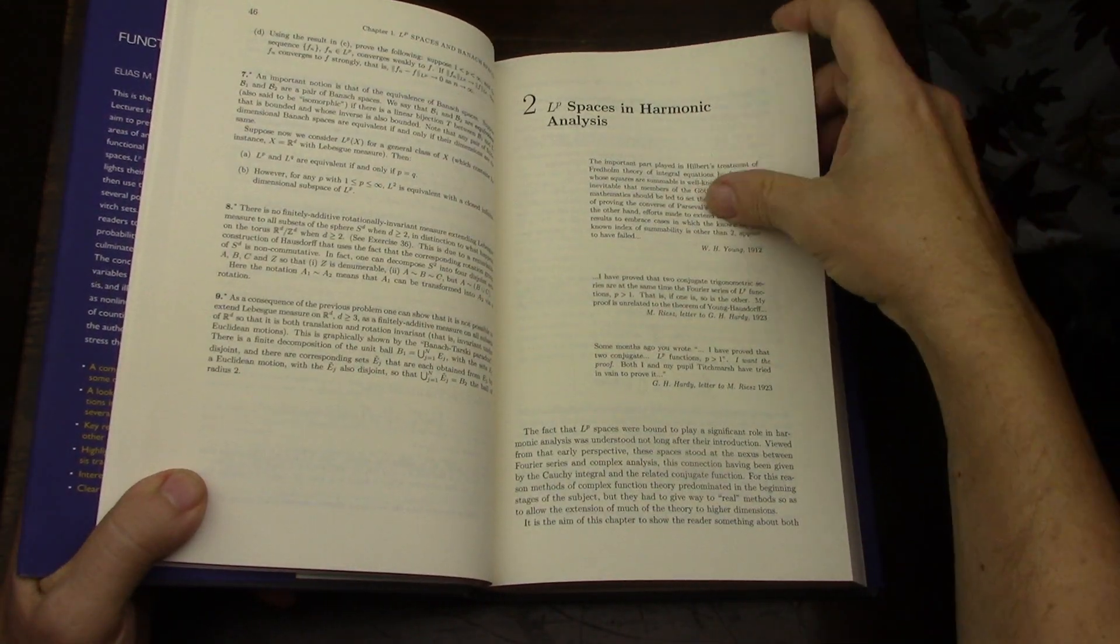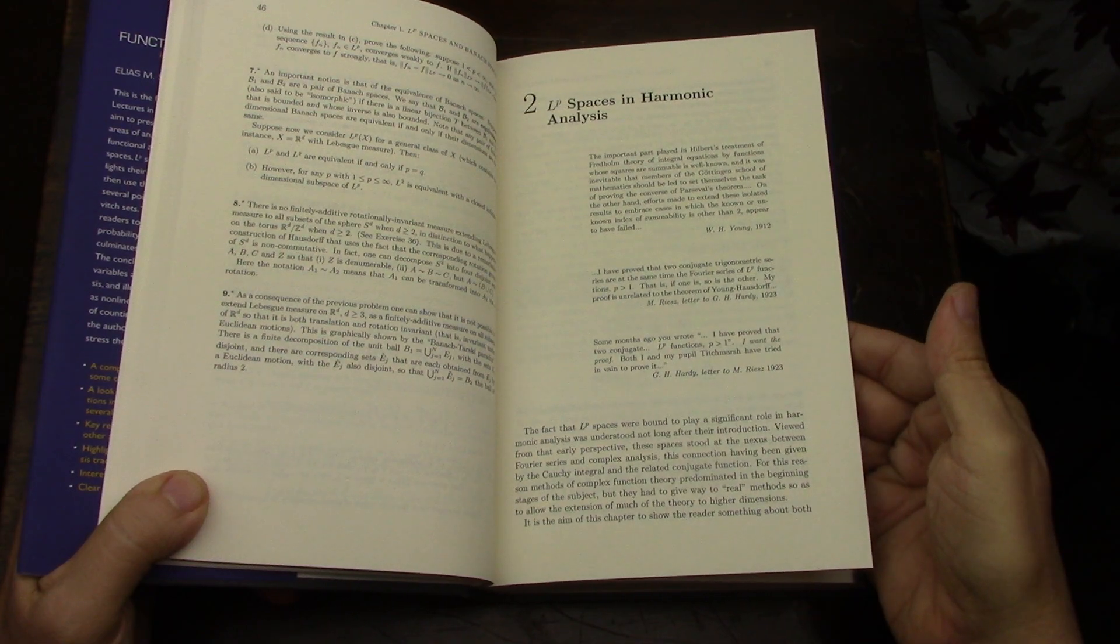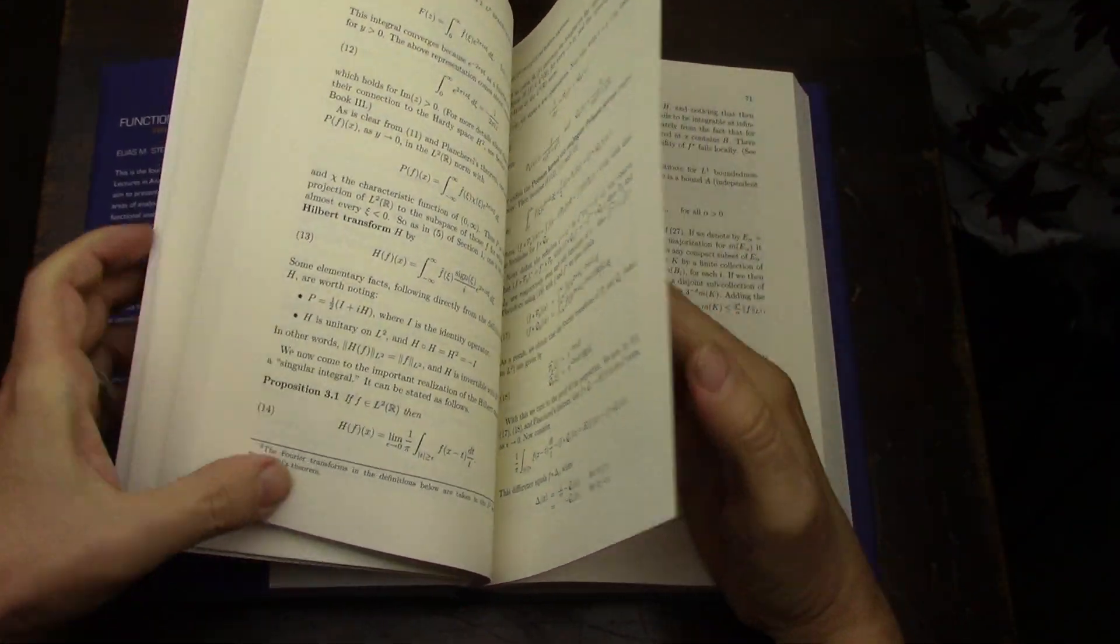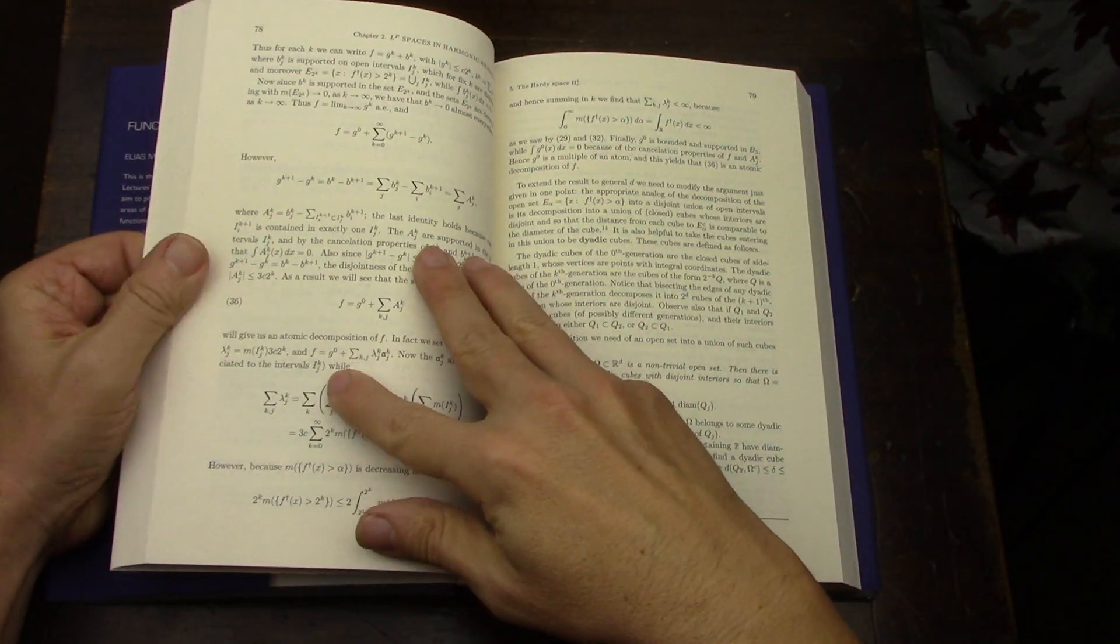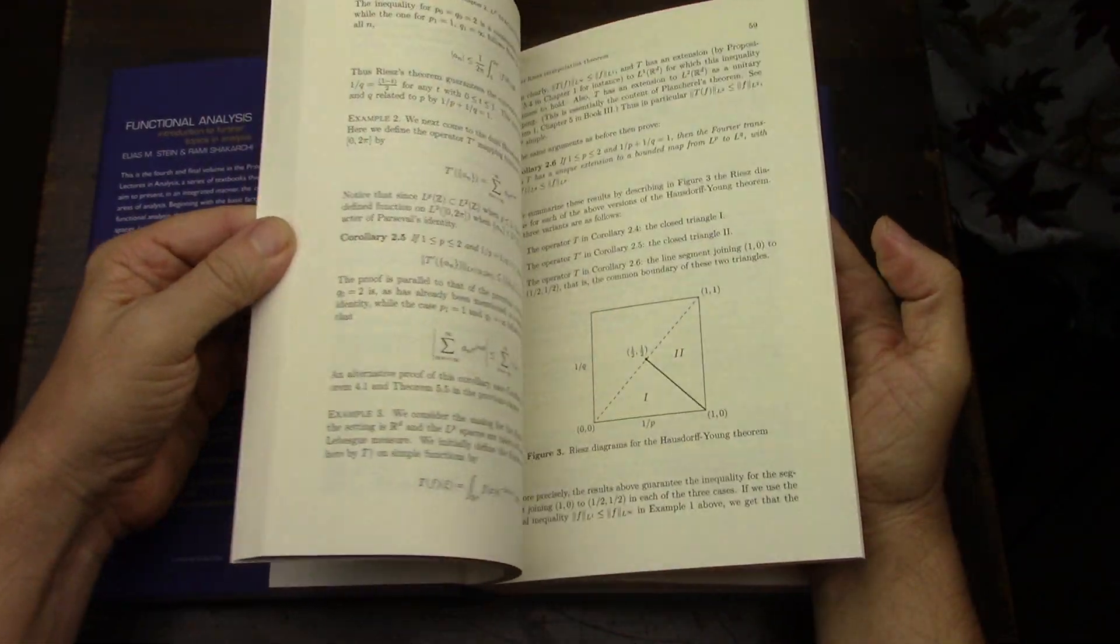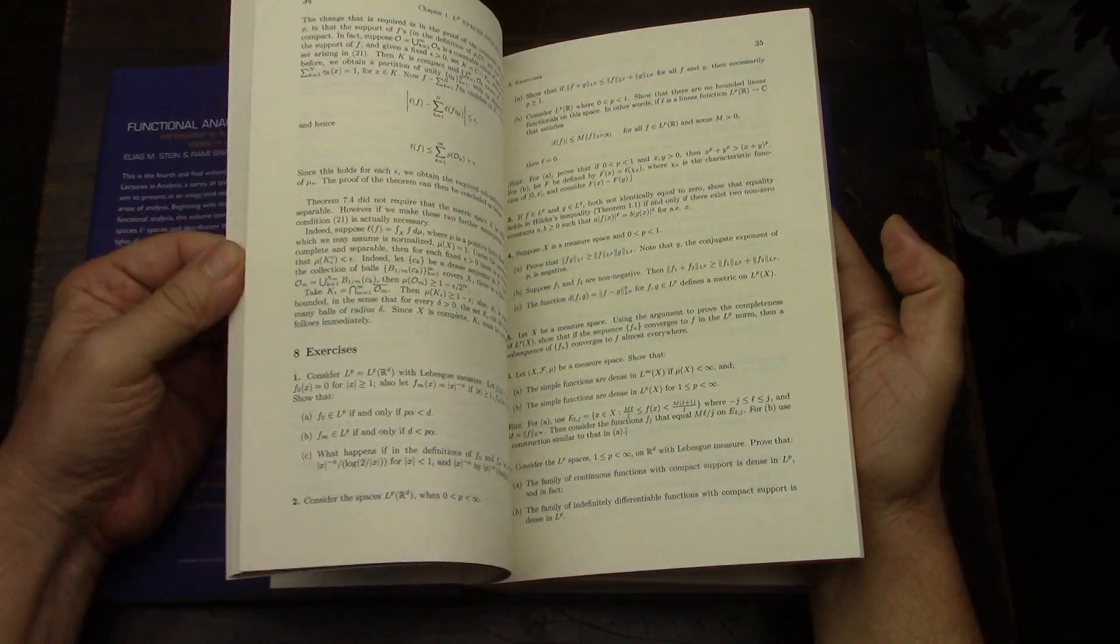So just paging through the parts about LP spaces. Of course, you'd have to do some complex analysis before you got here. And of course, volume three with measure theory and integration would have gotten you a lot of the basics before you got to this book.